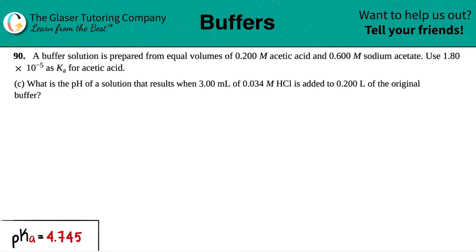Number 90. A buffer solution is prepared from equal volumes of 0.200 molar acetic acid and 0.600 molar sodium acetate. Use 1.80 times 10 to the negative 5th as the Ka for acetic acid. They're asking for what is the pH of a solution that results when 3.00 milliliters of 0.0034 molar HCl is added to 0.200 liters of the original buffer.